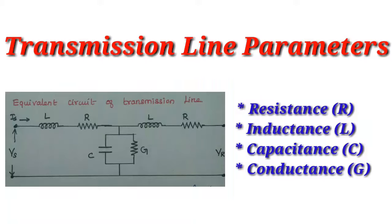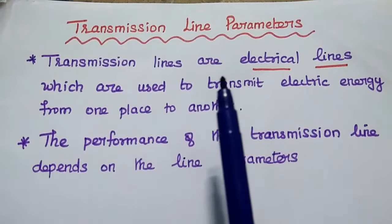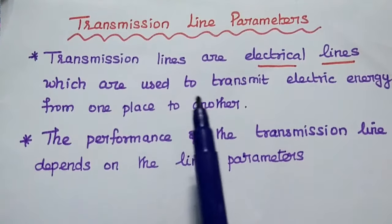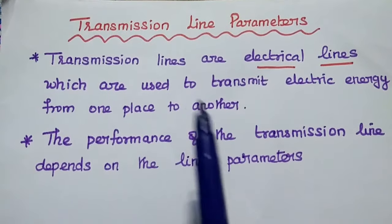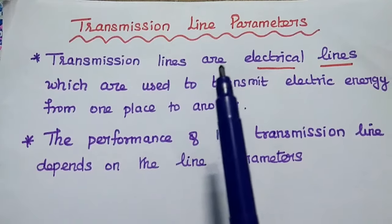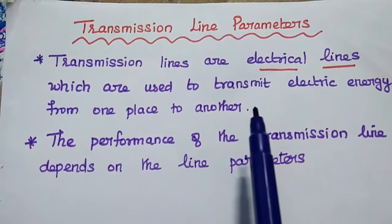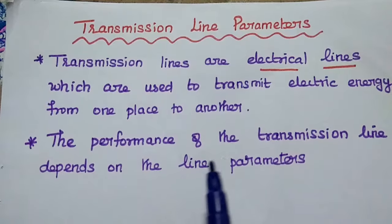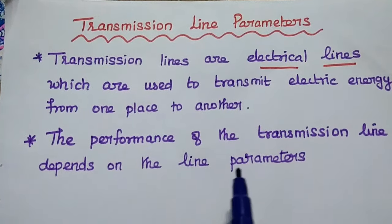Dear students, now we are going to discuss transmission line parameters in detail. Transmission lines are generally known as electrical lines, which are mainly used to transmit electric energy from one place to another. Transmission lines are made up of conductors which will transmit electric energy. The performance of the transmission line depends on the line parameters, which are also called transmission line parameters.